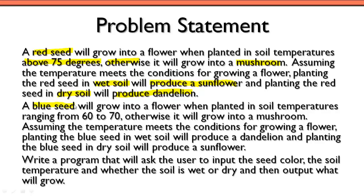Next we're looking at a blue seed. So we've got this choice between a red seed and a blue seed. The blue seed will grow into a flower when planted in soil temperatures that range between 60 and 70. Otherwise, it's also going to grow into a mushroom. Assuming the temperature is met, planting the blue seed in wet soil will produce a dandelion, and planting the blue seed in dry soil will produce a sunflower — basically the opposite of what we had before.